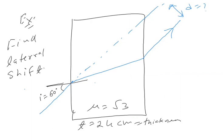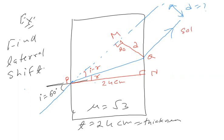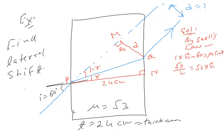तो जब इसे solve करना हो, perpendicular draw करके यहां 90 degree देंगे। यह point P, यह Q, यह M, यह N कह लिया। यह thickness 24 cm है, यहां angle R है और यह angle है I minus R। Snell's law at P: 1 × sin 60 = μ × sin R → √3/2 = √3 × sin R → sin R = 1/2 → R = 30 degree।